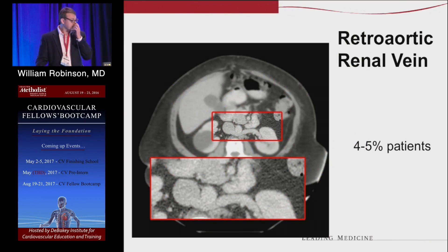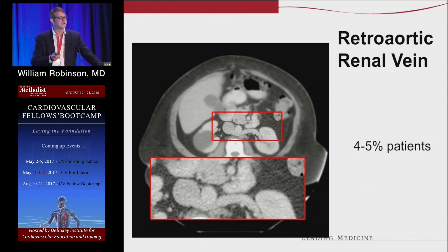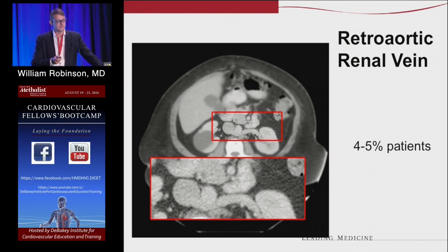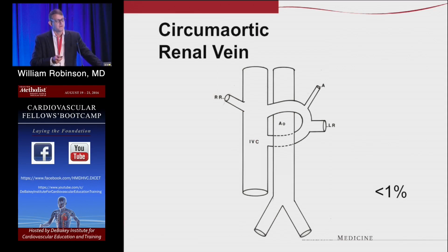Retro-aortic renal vein occurs in about four to five percent of patients. This is the classic reason to look at a CT scan before an aortic operation, and it is very difficult to deal with if you encounter it without recognizing it preoperatively. Circum-aortic renal vein is even more difficult to deal with, generally requiring ligation of one or both of the smaller circum-aortic renal veins. Fortunately, it's quite rare.